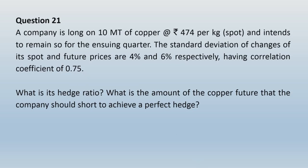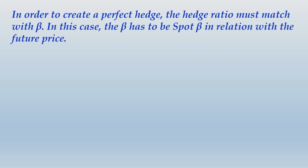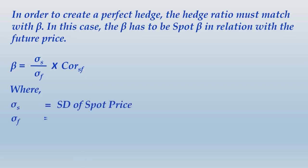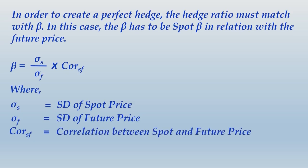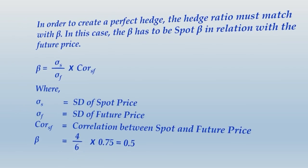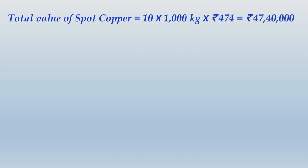In the solution, we first note that the company requires a perfect hedge, and therefore the hedge ratio must match with beta. In order to create a perfect hedge, the hedge ratio must equal beta. Beta equals standard deviation of spot divided by standard deviation of futures, multiplied by the correlation between spot and futures prices. So beta = (4/6) × 0.75 = 0.5.